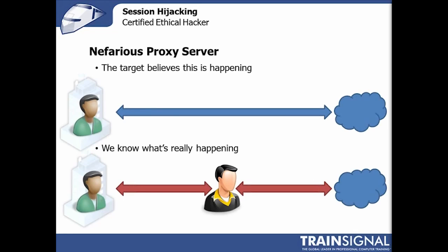I like to visualize how a nefarious proxy server works this way: the client believes they are connecting straight to the internet, perhaps with some firewall in between. But what's really happening is there's an ethical hacker man-in-the-middle attack in play. The man-in-the-middle becomes the internet to the client and becomes the client to the internet, proxying all traffic back and forth. It does require a little bit of engineering and can have a performance impact, but people are used to the internet slowing down, so it may not be noticed at all.